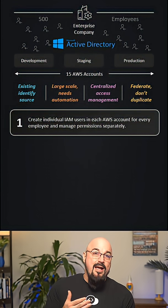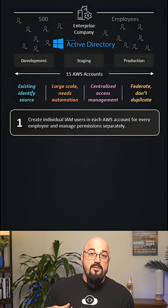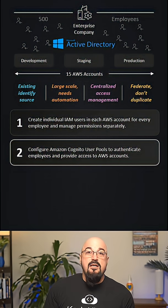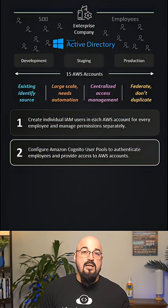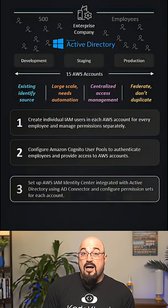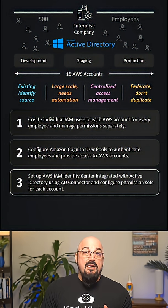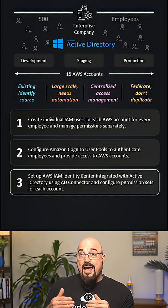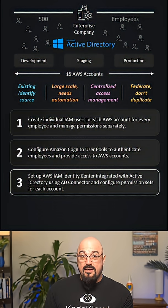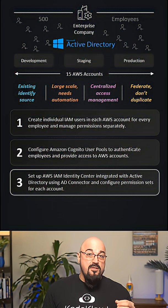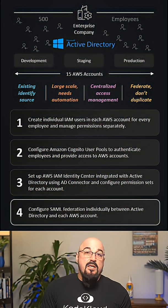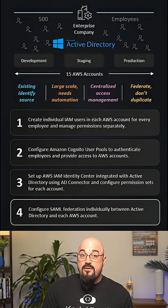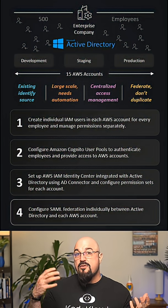Option one: create individual IAM users in each of the 15 AWS accounts for every employee and manage the permissions separately. Option two: configure Amazon Cognito user pools to authenticate employees and provide access to AWS accounts. Option three: set up AWS IAM Identity Center integrated with Active Directory using the Active Directory connector and configure the permission sets for each of the accounts on AWS. Option four: configure SAML federation individually between Active Directory and each of the AWS accounts.